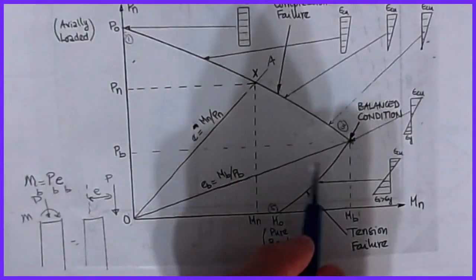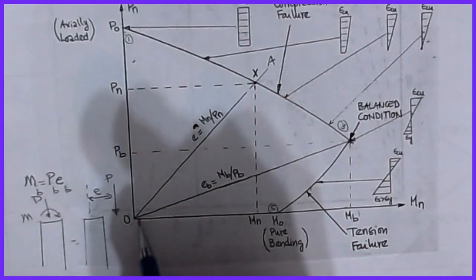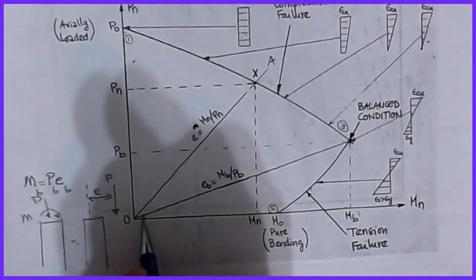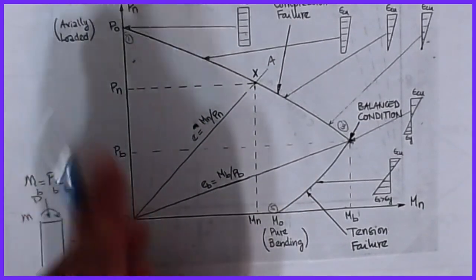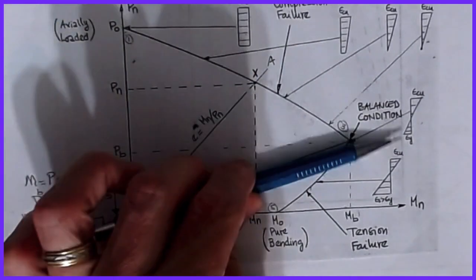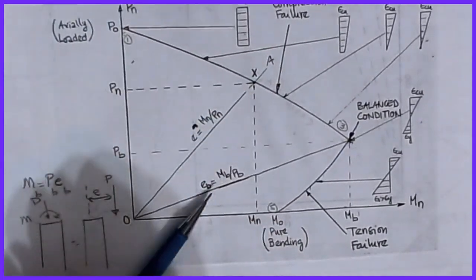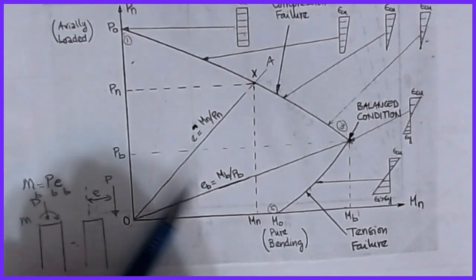This balanced e is the one that gets me at balance and P balanced for a given axial load value. That's eb. What we can do is if I can figure out what eb is, then I know that zero was here and balance was here.